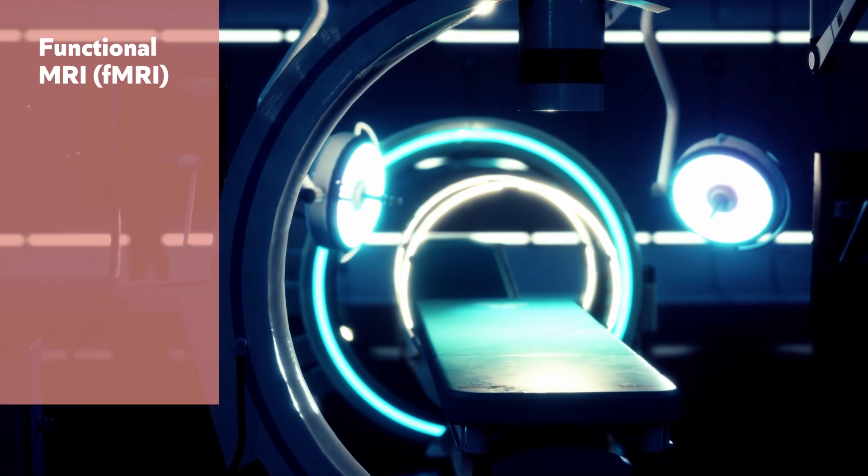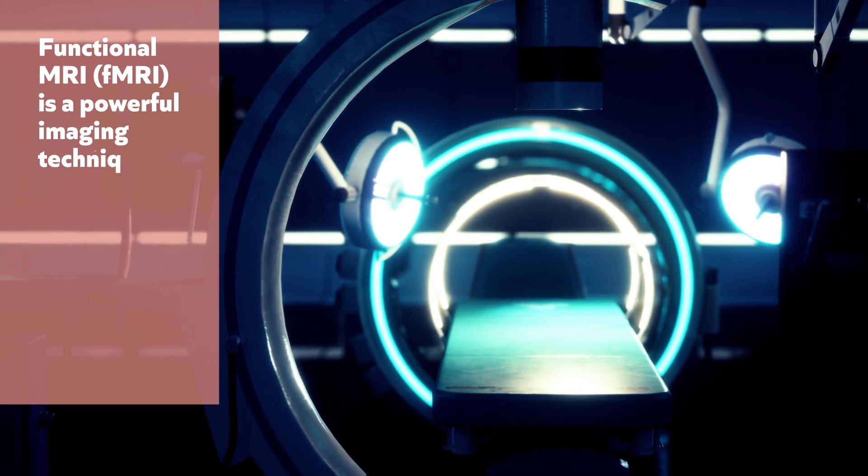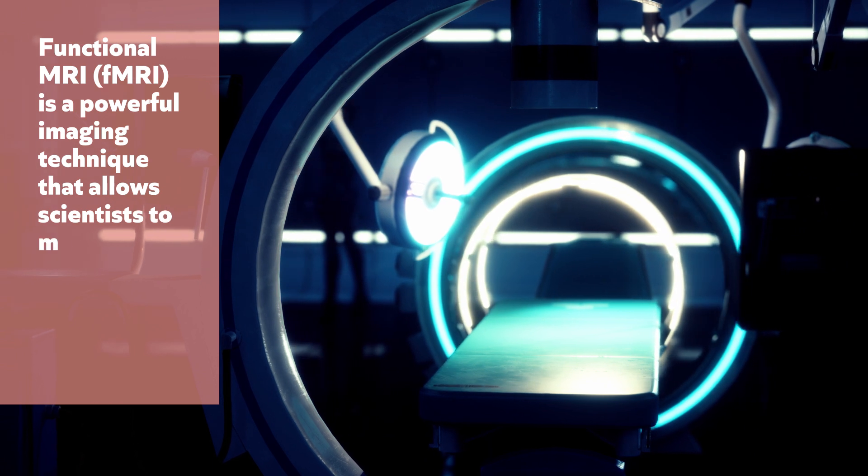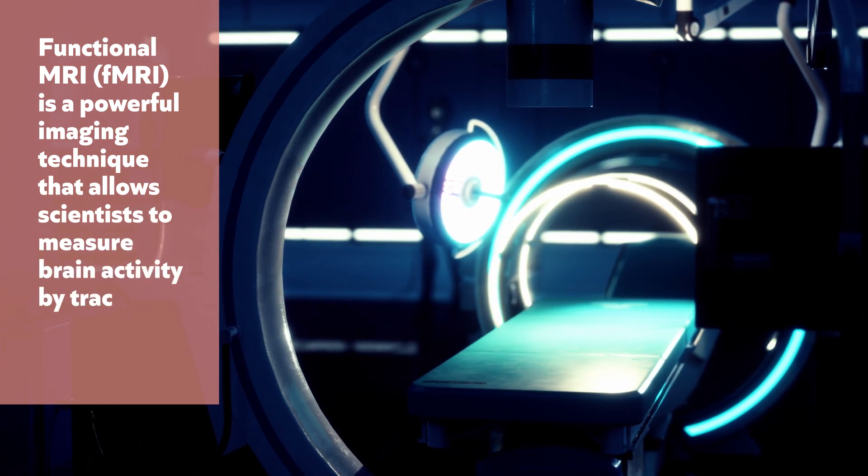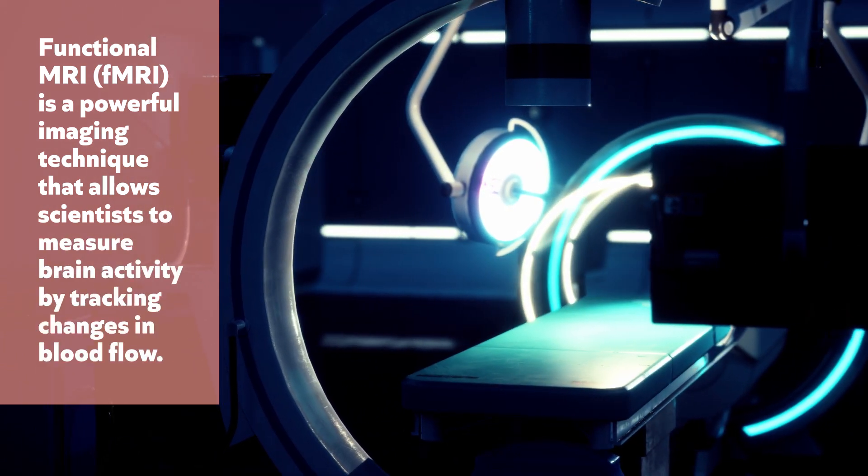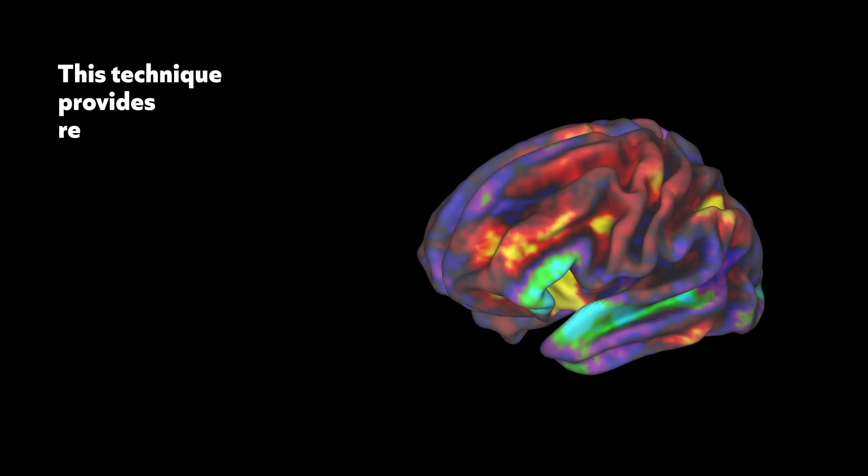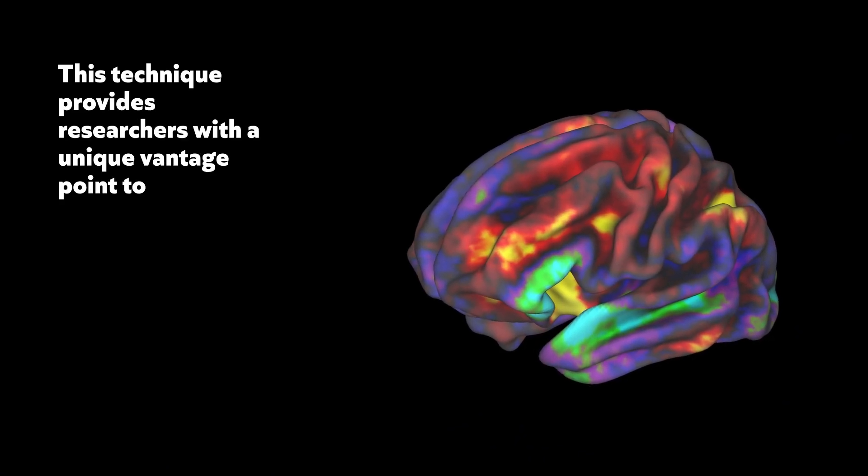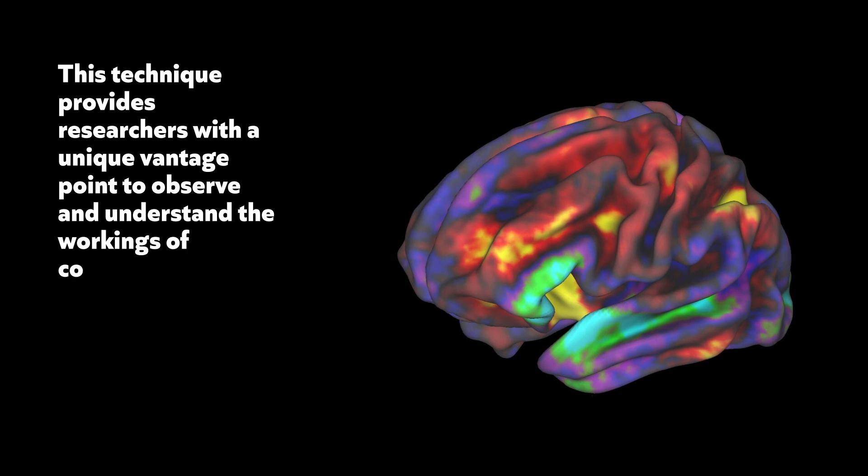Functional MRI, or fMRI, is a powerful imaging technique that allows scientists to measure brain activity by tracking changes in blood flow. This technique provides researchers with a unique vantage point to observe and understand the workings of consciousness.